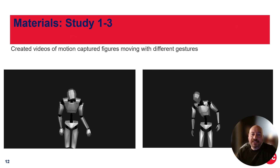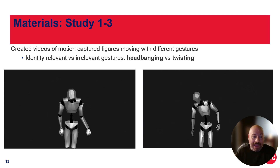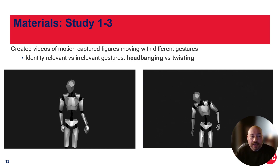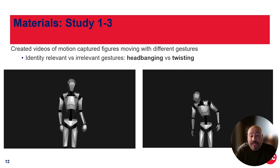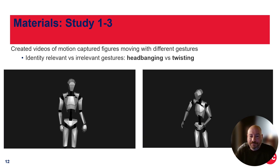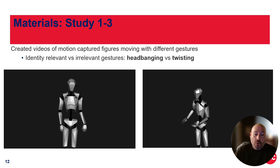These videos were created through motion capture figures — they were wearing body suits during the recordings. Both of these videos are of the expert, Zach. Here you're going to see an identity-relevant gesture: headbanging. You can see he's moving in a particular way, measured at 60 hertz. And then you can see him doing what we call twisting, which could be done at any kind of musical concert. I preferred the name 'dad dance,' but I lost on that one — it really does look like a dad dance. So these two types of gestures are the ones that won out from others we had looked at and tested.